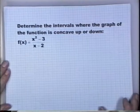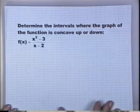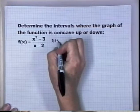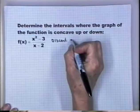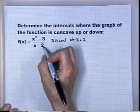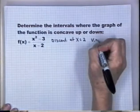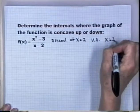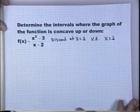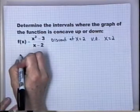Next example: determine the intervals where the graph of f(x) = (x² - 3)/(x - 2) is concave up or down. Notice this function has a discontinuity — when x = 2, the denominator is zero but the numerator is not, so there's a vertical asymptote at x = 2. To find the second derivative, we need the first derivative using the quotient rule.